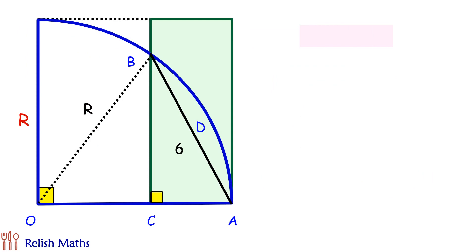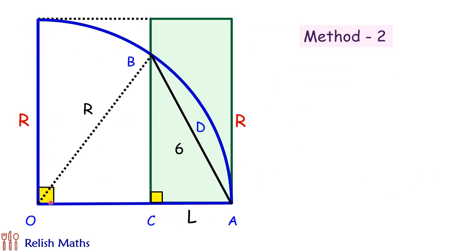Let's check the second way of solving it. Let's assume the length of the rectangle is L. The height of the rectangle is the same as the radius of the quadrant R, and thus the area of the rectangle is L times R.